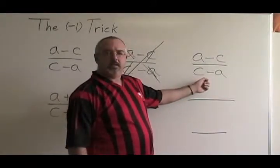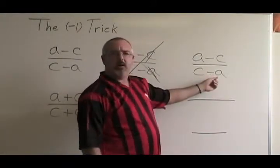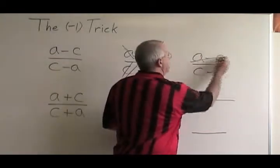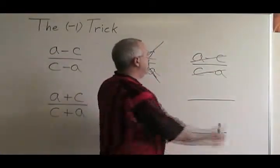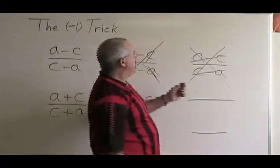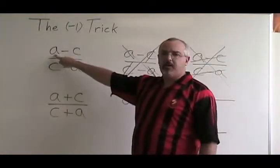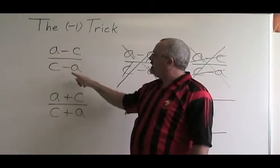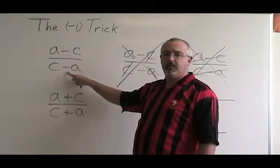Another thing people try is to say a minus c looks like c minus a, they're the same, so I can cancel them. That is also not allowed. Why? Because the a on the top is positive a, and the a on the bottom is a negative a. They are not the same binomial.